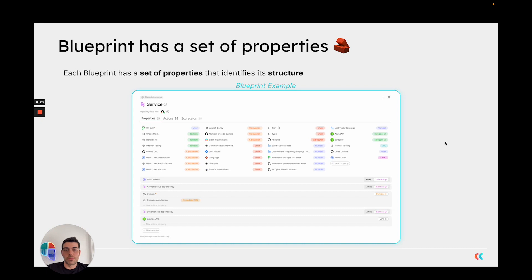Here we can see a blueprint example for the service blueprint, and we can see the different set of properties defined in the example — for example, the current on-call, the number of code owners, a URL for the Slack notifications, the readme markdown file, and so on.